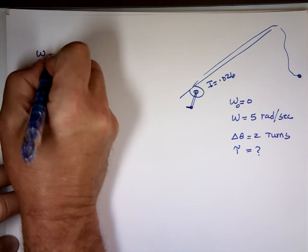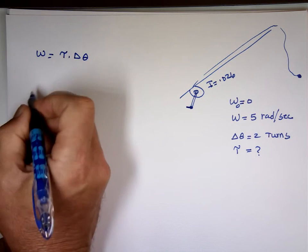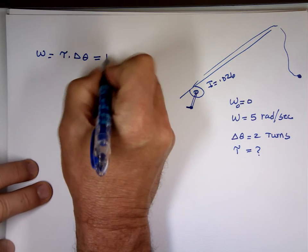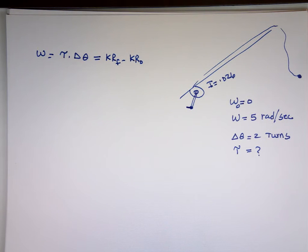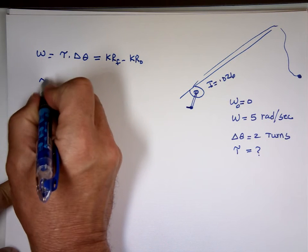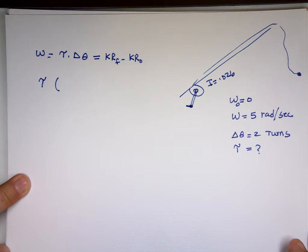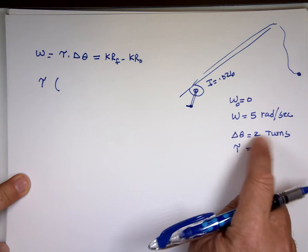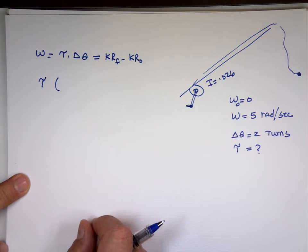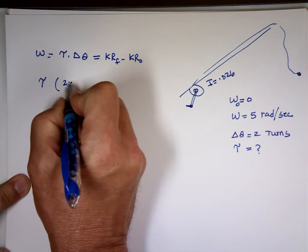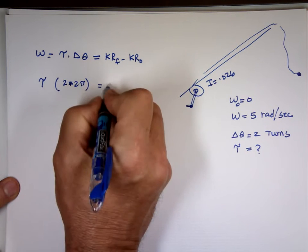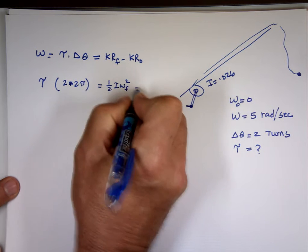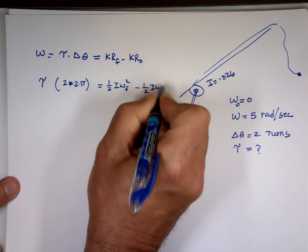Well, we know work is torque times delta theta. Also, work is change in the rotational kinetic energy. Now, let's look at this. The torque by you is unknown. We're looking for it. The change in theta. Now, delta theta is two turns, but that's not in radian, so you've got to change it to radian. You multiply by two pi. So two times two pi. That becomes four pi. Equals one-half I ω final squared minus one-half I ω initial squared. That's the change in the kinetic energy.